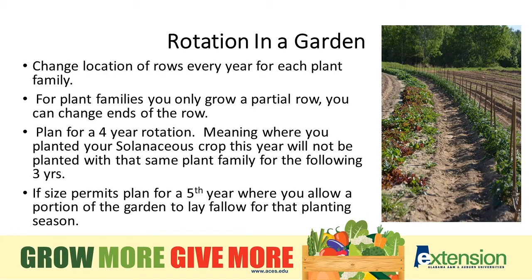When we talk about rotation in a garden, we're simply saying we're going to change the locations of rows every year for each plant family. For plant families where you only grow a half or a quarter of a row of a particular type of plant, you can simply change the end of the row that you start those plants on. You need to plan for a four-year rotation, meaning where you planted your solanaceous crops this year will not be planted with that same plant family for the following three years. If size permits, plan for a fifth year where you allow a portion of your garden to lay fallow for that planting season and then add it back to the rotation.